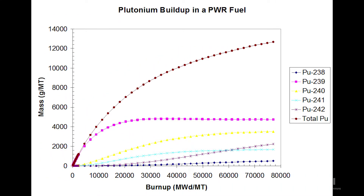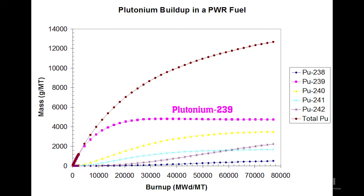Looking at plutonium production in an operating reactor, this chart shows plutonium buildup in a pressurized water reactor — the mass or concentration of plutonium as a function of burn-up. Burn-up is the amount of energy liberated from the fuel per unit mass. Plutonium-239 builds up linearly at first, then as the reactor continues to operate, the Pu-239 starts absorbing neutrons and reaches equilibrium where production equals destruction by fission or absorption. If burn-up continues to increase, Pu-239 production would eventually peak and then actually start to decrease.